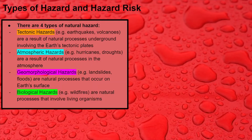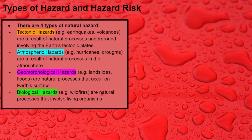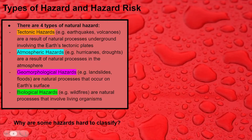Geomorphological hazards — you probably won't have seen this word before — are natural processes that occur on the Earth's surface, for example landslides and floods. It could be argued that floods are atmospheric hazards because they are caused by rain from the atmosphere, but floods are also influenced by factors on Earth's surface. Biological hazards are natural processes that involve living organisms, for example wildfires, where the trees are the living organisms. Some hazards are hard to classify because they can be caused by both atmospheric and surface processes.